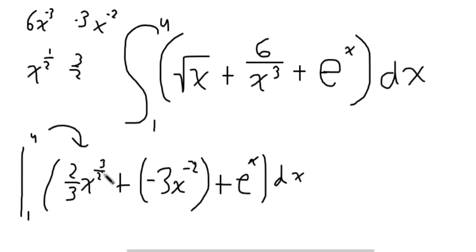4 to the 3 halves is the square root of 4, which is 2 to the power of 3, which is 8. So you would get 16 over 3. Then you're adding something that's negative. So let's just subtract 3 times x negative 2. It's basically just dividing by x squared. So we're going to get 3 over 16. Next, we're adding e to the x. So we can just add e to the 4.